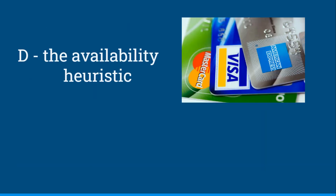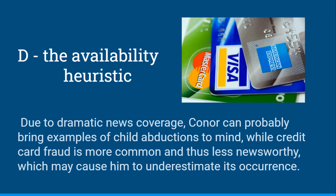And this would be D, the availability heuristic. Due to dramatic news coverage, Connor can probably bring examples of child abductions to mind, while credit card fraud is much more common and thus less newsworthy, so this might cause him to underestimate its occurrence because he can't bring as many examples to mind, even though there are actually many, many examples.